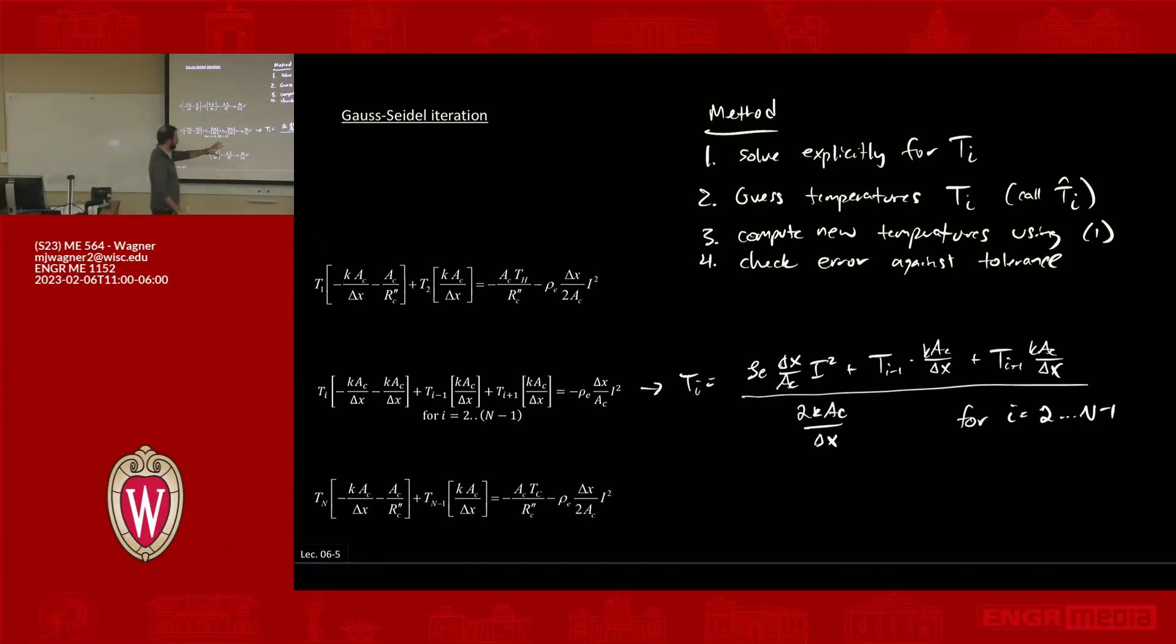All right, we have now an explicit relationship. I can go through, let's say I knew everything over here, I can at least use that all to assign a value to Ti. And this is where that guess comes in. So I've solved explicitly here, but as I'm going through this process, when I get to Ti, I probably already have a value for Ti minus 1. I definitely don't have a value for Ti plus 1. I haven't gotten there yet.